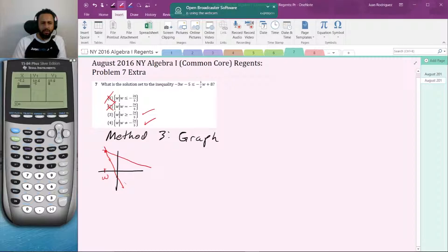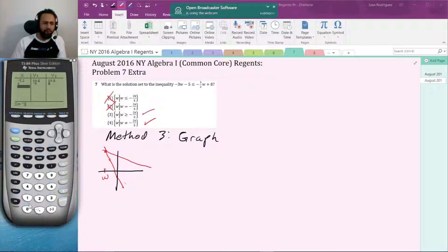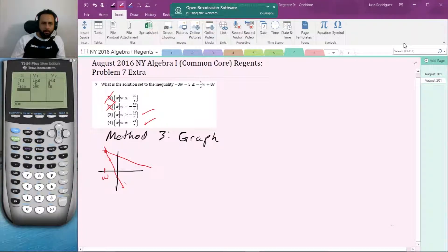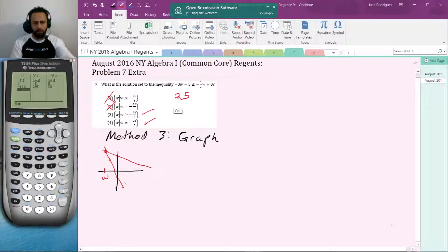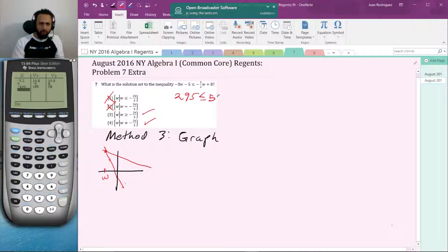So we need to test another number that doesn't satisfy choice 4, something like, let's say, it can't be greater than negative 26 over 5, so it has to be something less than negative 26 over 5. How about negative 100? Negative 100 definitely less than negative 26 over 5. Okay, so we've plugged in X equals negative 100.